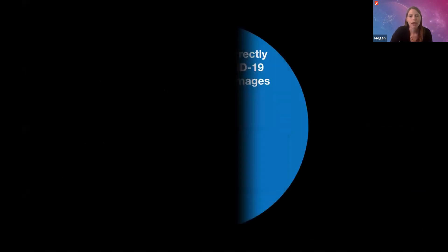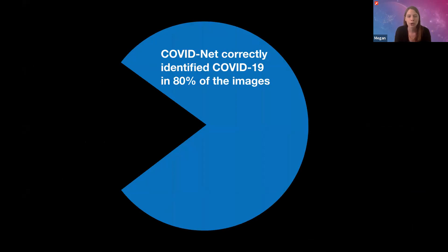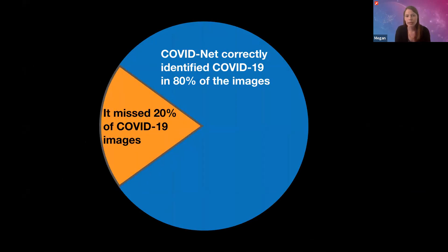But it's not perfect. When they tested COVID-Net, they found that it was able to identify COVID-19 in 80% of the confirmed COVID-19 chest X-rays, which means it missed the virus 20% of the time. They're still working on this AI program and say it's not yet ready for widespread use. But they did make the COVID-Net program and the COVIDX image database freely available to the public so that other researchers can use it and help improve it.